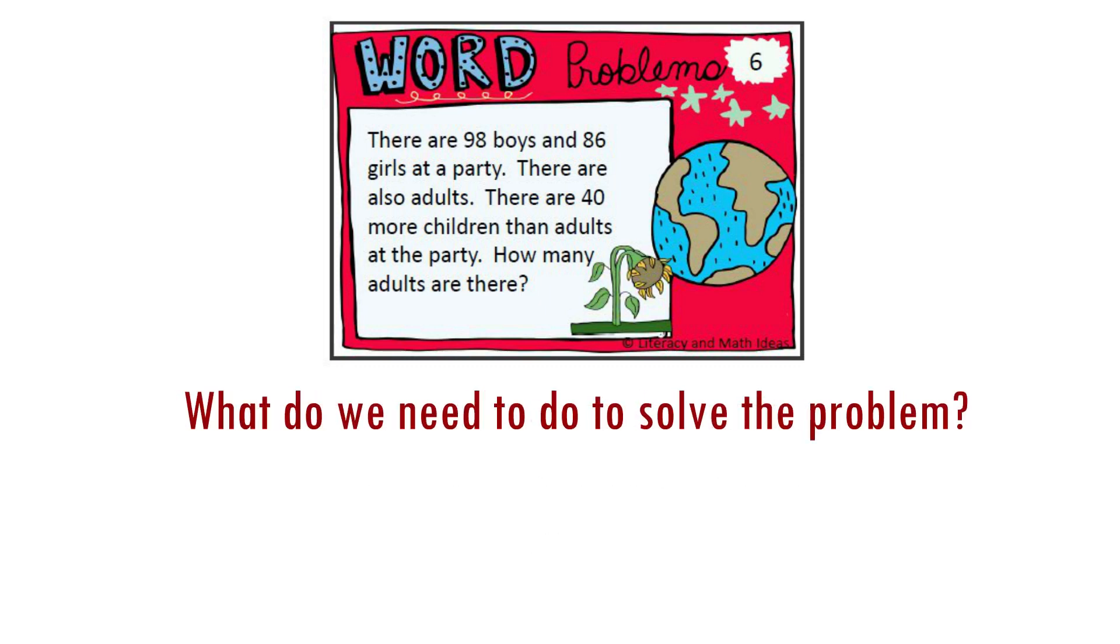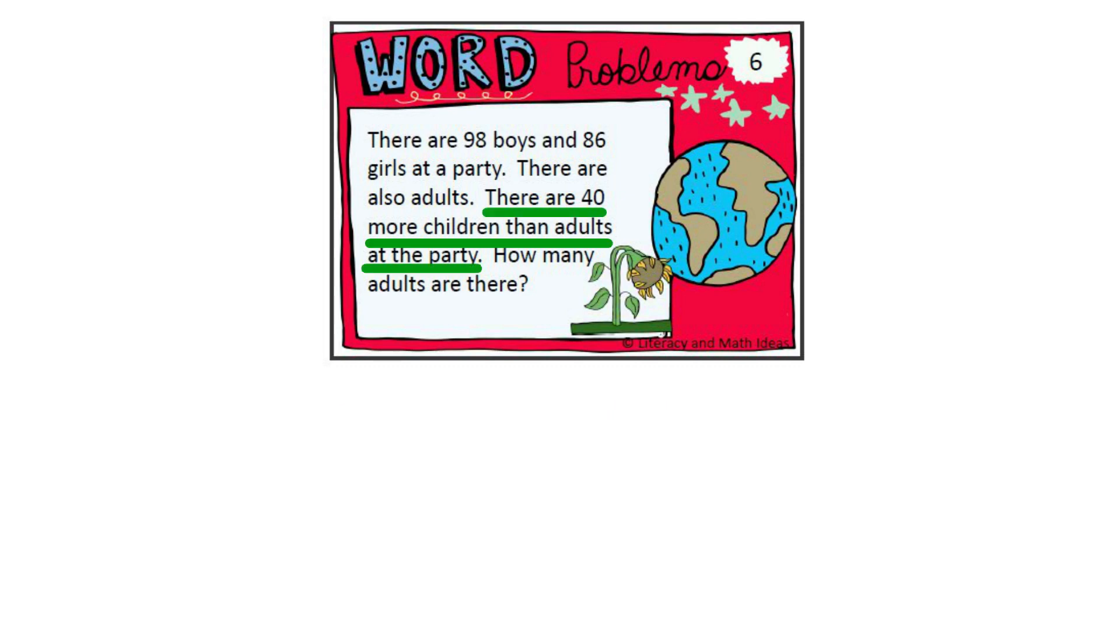Let's also ask ourselves: what do we need to do to solve this problem? Because we are given information that there are 40 more children than adults at the party, this will be an important clue for us to find out the total number of adults at the party.